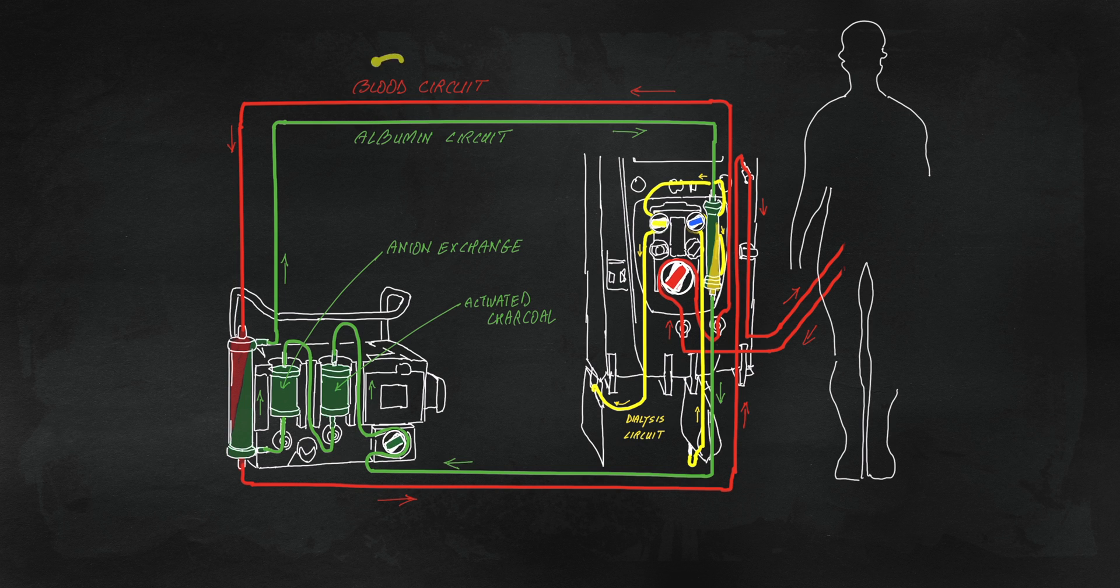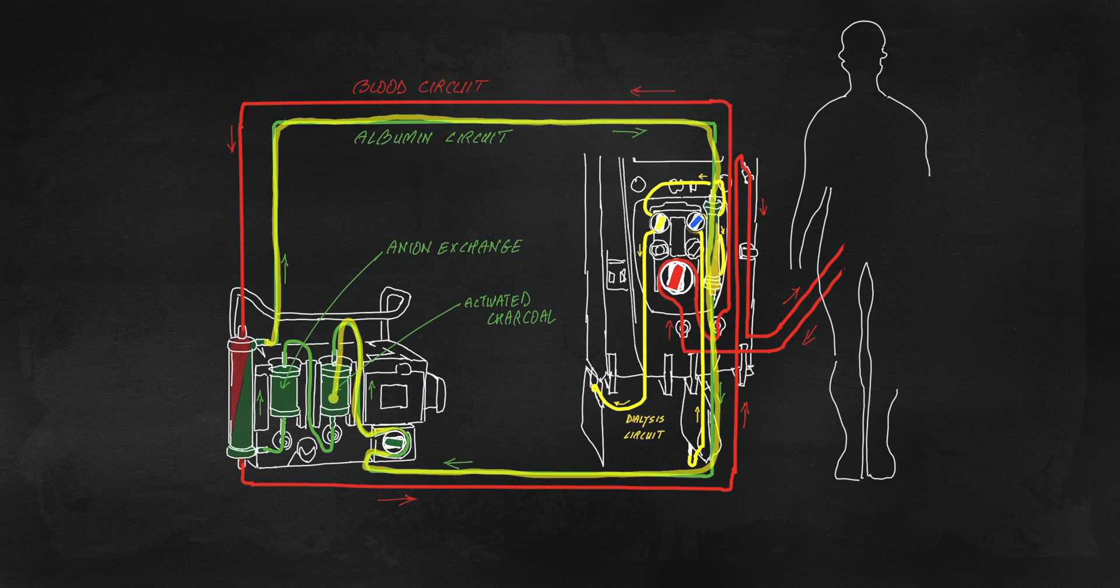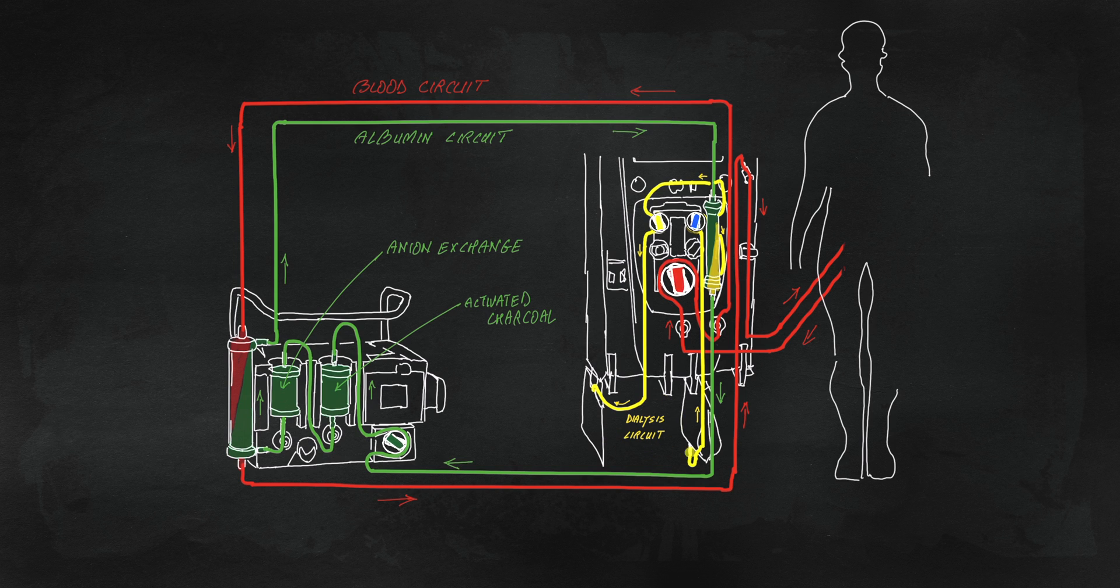To recap, we have the blood circuit, driven by the PrismaFlex blood pump. The closed albumin circuit, which stays in motion via the pump on the MARS machine and goes through all the four filters. And last is the dialysate circuit, which clears the albumin circuit from typical low molecular weight and non-protein bound solutes such as electrolytes, urea, creatinine, and ammonia.